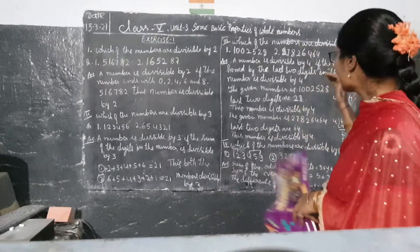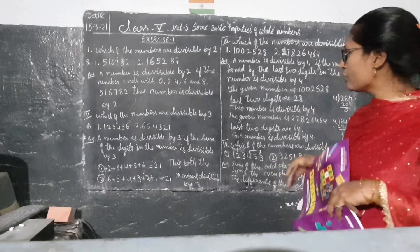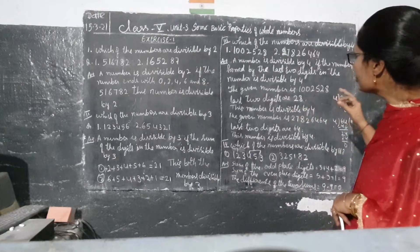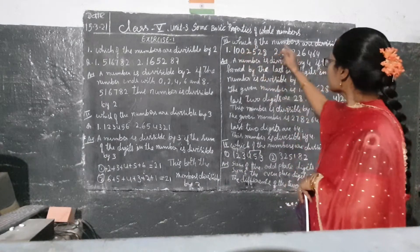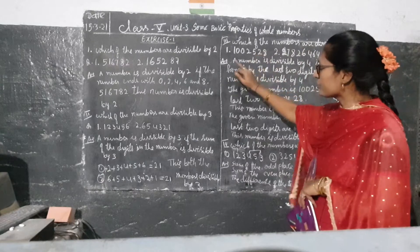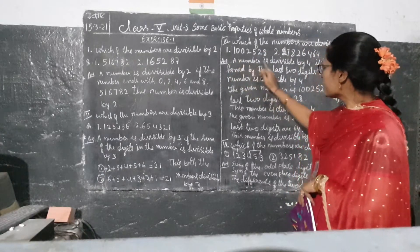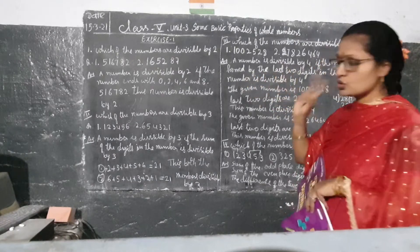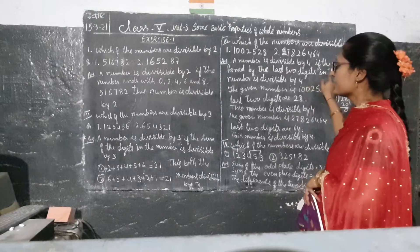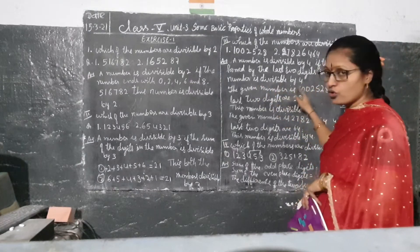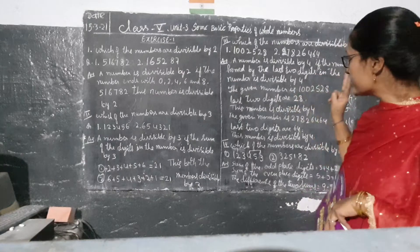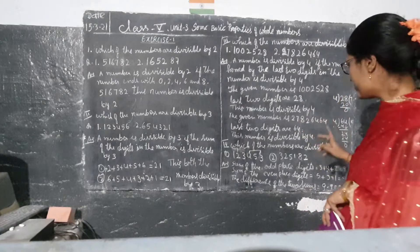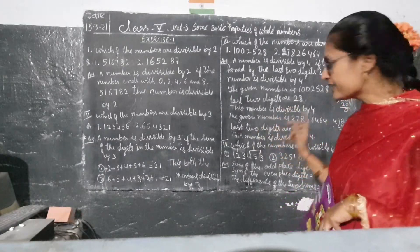Which of the following numbers are divisible by 4? We have to follow the rule for 4. What is the rule of divisible by 4? A number is divisible by 4 if the number formed by the last 2 digits is divisible by 4. Whatever the last 2 digits are, we have to check if those last 2 digits are divisible by 4 or not. If yes, the number is divisible by 4.